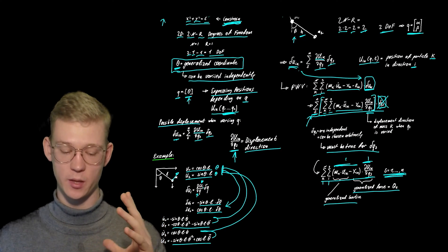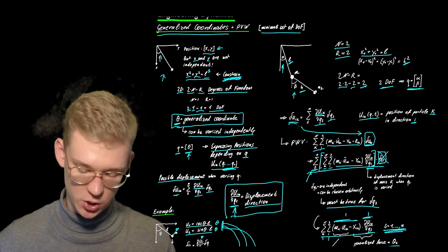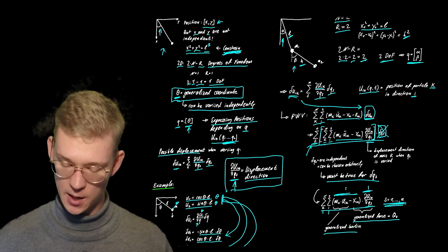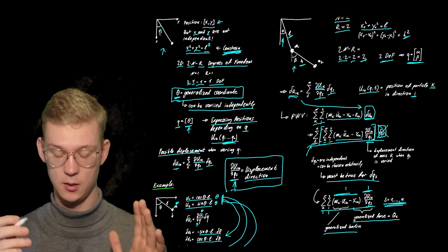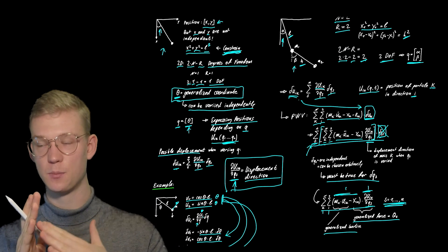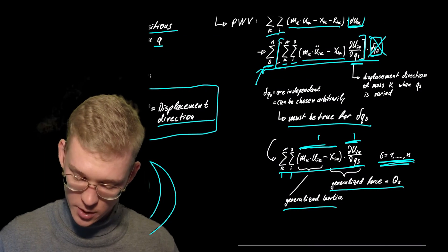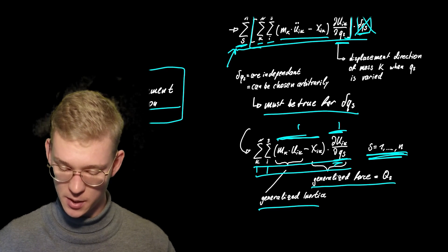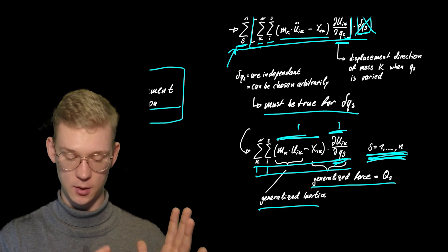I hope this video gave you a small understanding of how we work with generalized coordinates and what we can do with them: first to get the displacement directions when we don't know how the system is moving, and then to remove the reaction forces because they do not participate in the displacements when we project the equations of motion into the space of directions compatible with the constraints. We are left with an equation involving the mass, the force, and the possible displacements depending on q — valid for every possible variation of our q's.